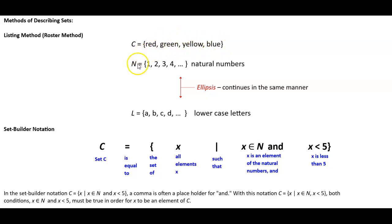This is a roster method. Capital N here is equal to 1, 2, 3 dot dot dot. This would represent natural numbers.